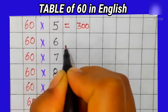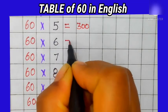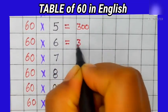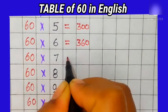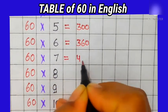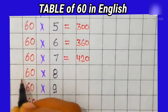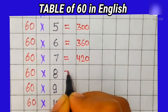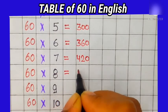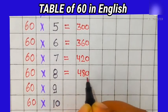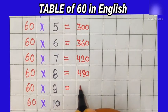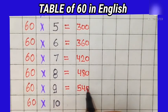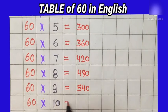66's are 360, 67's are 420, 68's are 480, 69's are 540, 60 10's are 600.